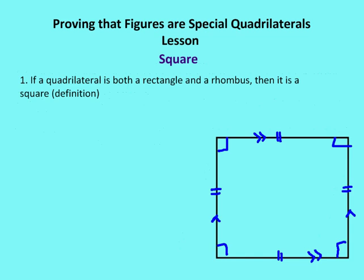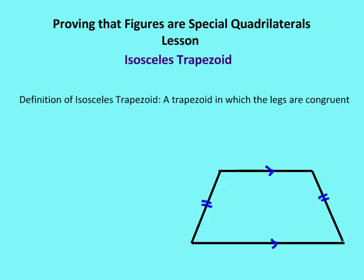Next figure is a square. The definition of a square is a quadrilateral that is both a rectangle and a rhombus. So if we prove that a figure is a rectangle and a rhombus, then we've proven it's a square. There are no other proofs beyond this one definition.